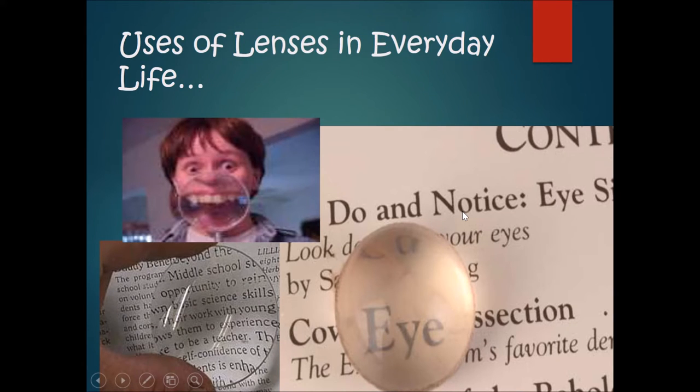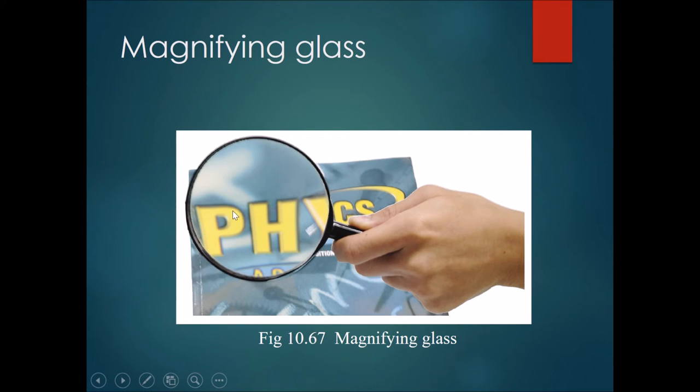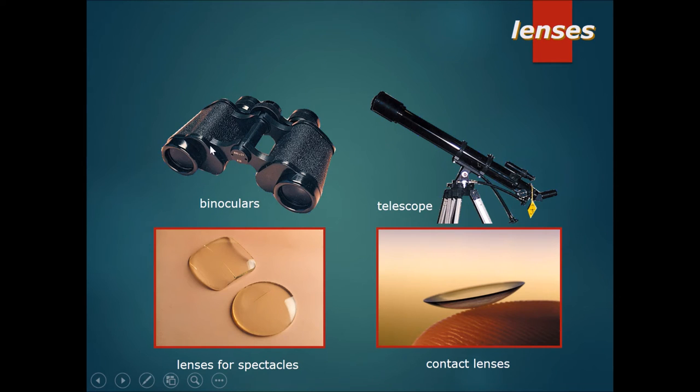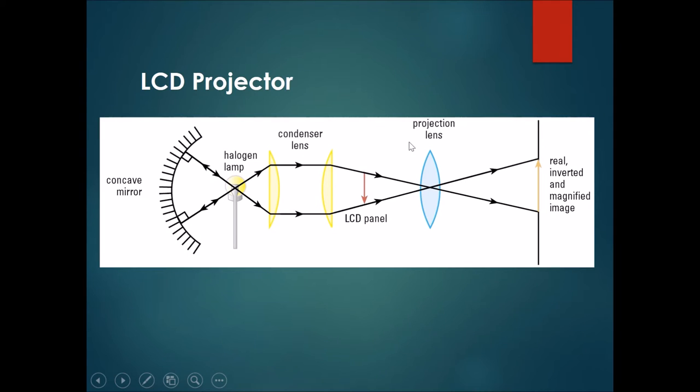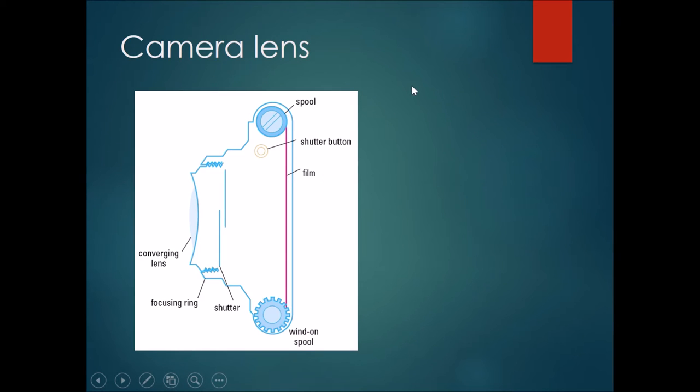Some uses of lenses in everyday life: one basic use is to make stuff look bigger, as you can see with these two lenses below. Magnifying glass to make things look bigger, binoculars, lenses for spectacles, telescopes, contact lenses, LCD projectors, and cameras all use lenses.